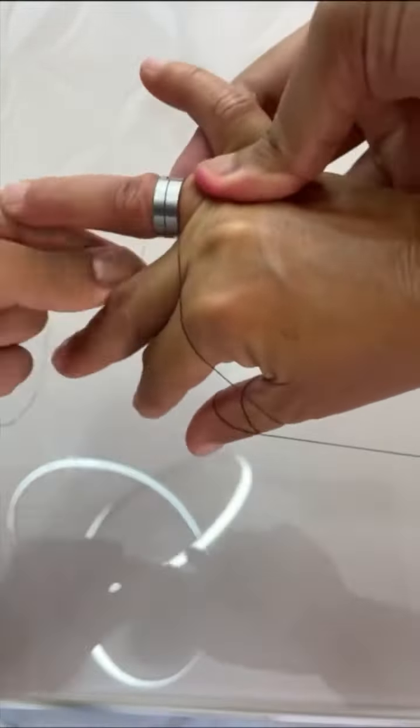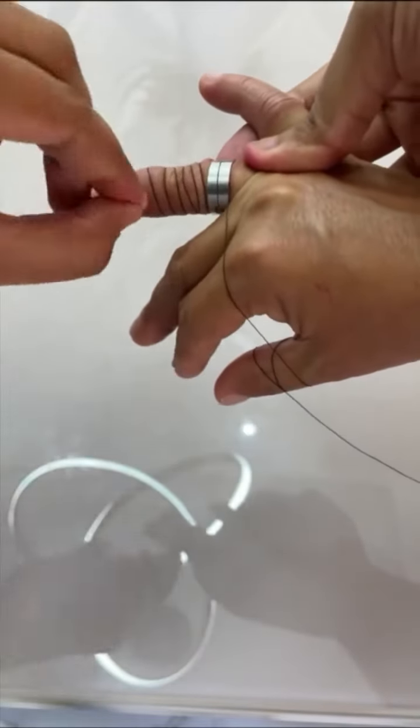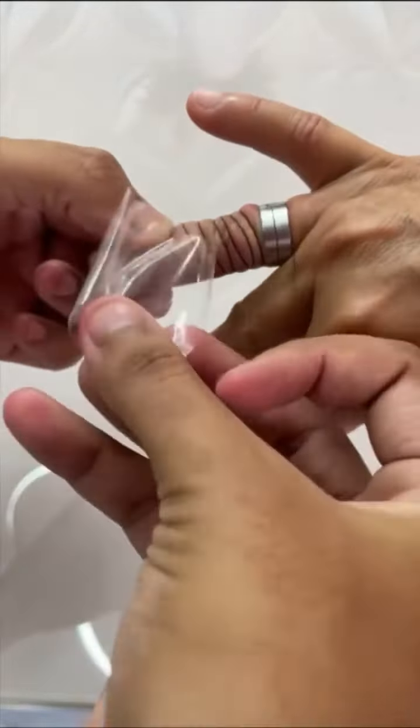Once this is done, we'll wrap the thread around the finger that the ring is stuck to a few times, and it will look like this.